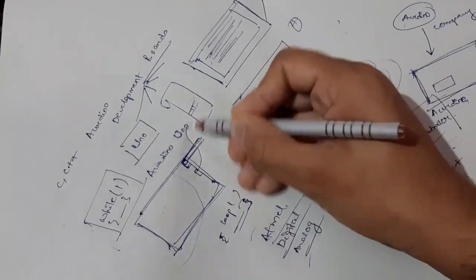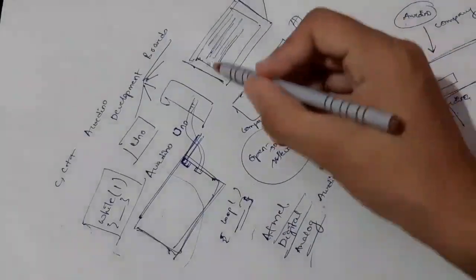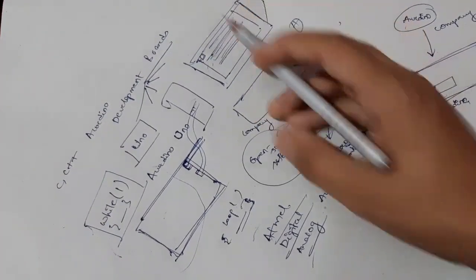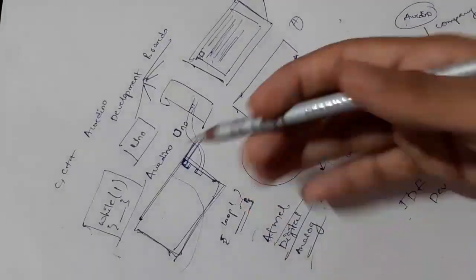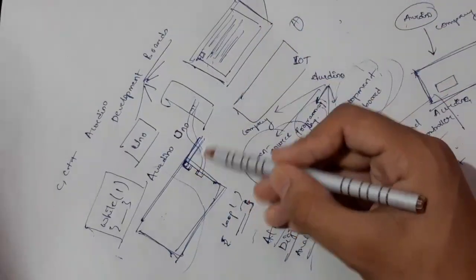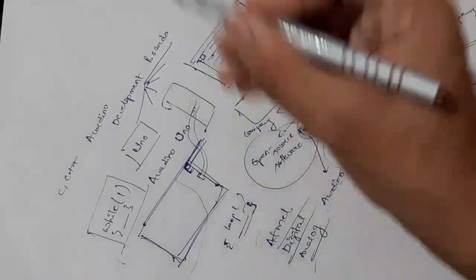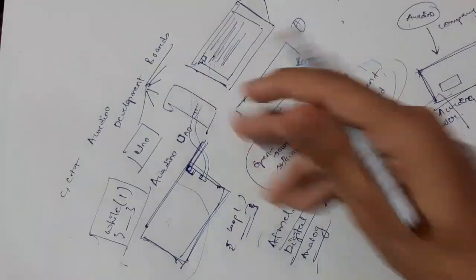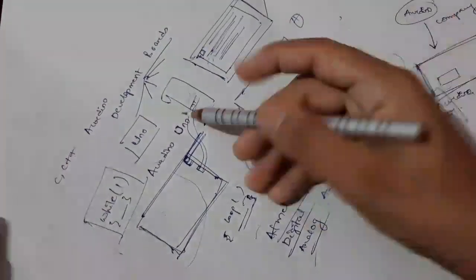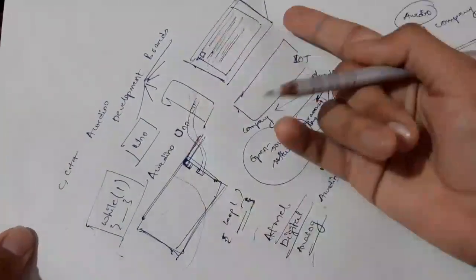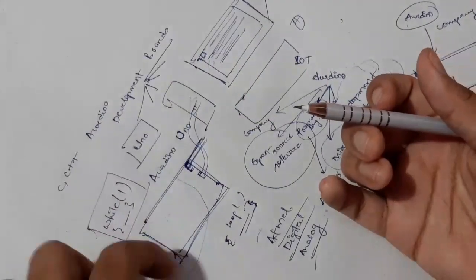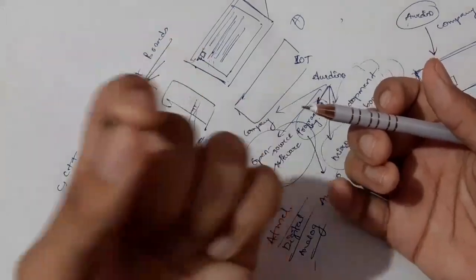With a USB connection, you can connect the board to your system. There is a button to push the code into the board and start executing. When you have a laptop or system, it can power the board directly. If you need external power, your system can also drive power to the board.